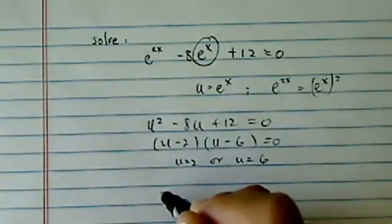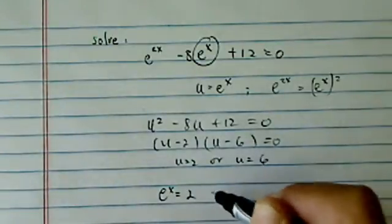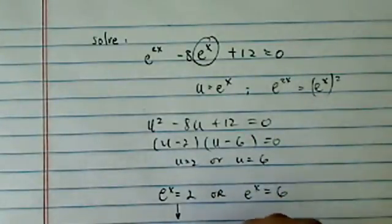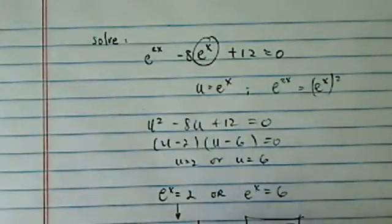Let's substitute it back in there, e to the x equal to 2 or e to the x equal to 6, which means x equal to natural log of 2 or x equal to natural log of 6. Here's the two answers.